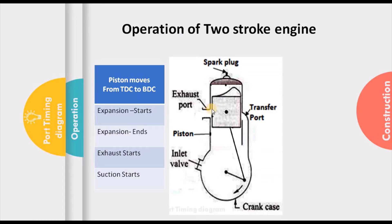The expansion ends because the moment the exhaust port opens, the exhaust starts and all the pressure is relieved as the gases flow out through the exhaust port. So it is effective expansion from TDC to that location. Thereafter exhaust starts, and as the piston moves further down, the transfer port also opens and suction starts — the mixture begins coming into the combustion chamber.